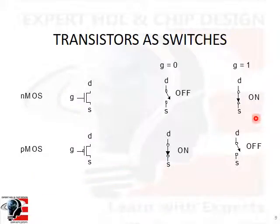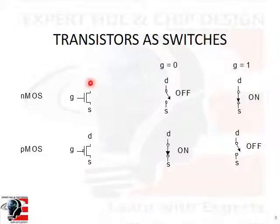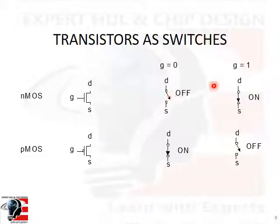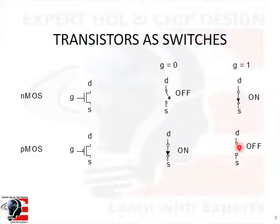In digital circuits, MOS transistors are electrically-controlled switches. Voltage at the gate terminals of MOSFETs controls the path from source to drain. For an NMOS, when the gate terminal is zero the device is off, and when the gate terminal is one the device is on, providing a conducting path between drain and source. For a PMOS, on the other hand, when the gate terminal is one the device is off, and when the gate terminal is zero the device is on.